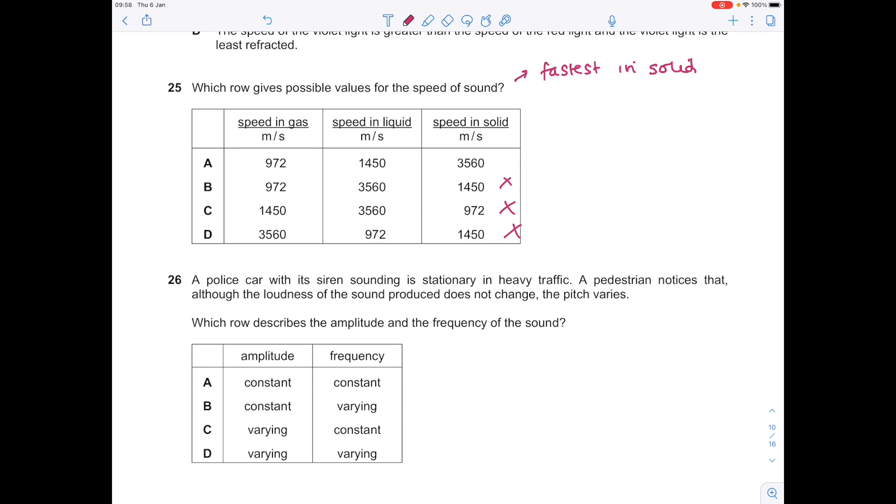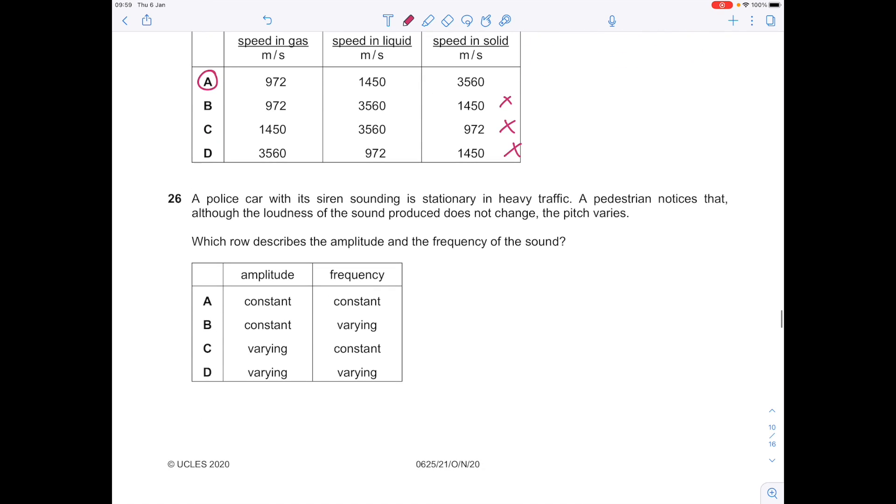A police car with its siren sounding is stationary in heavy traffic. A pedestrian notices that although the loudness of the sound produced does not change, the pitch varies. Which row describes the amplitude and the frequency of the sound?